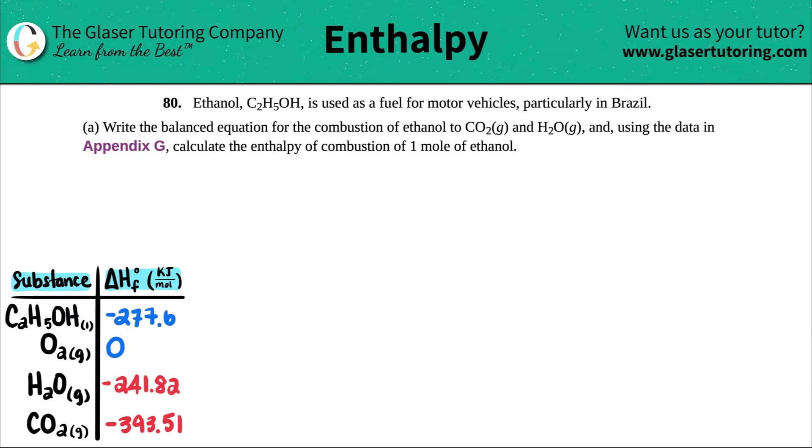Number 80. Ethanol, which is C2H5OH, is used as a fuel for motor vehicles, particularly in Brazil. And then we have letter A. Write the balanced equation for the combustion of ethanol to CO2 gas and H2O gas, and using the data in Appendix G, calculate the enthalpy of combustion of one mole of ethanol.